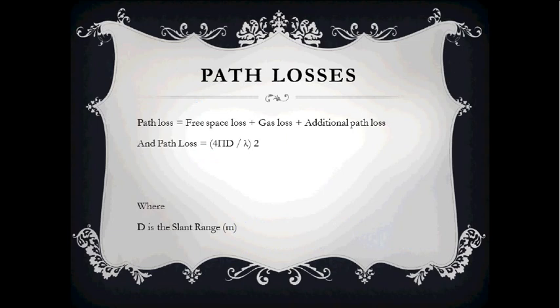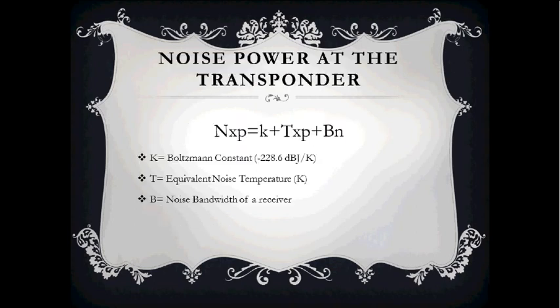Path loss is the sum of the free-space loss, gas loss, and additional path losses, also calculated by the formula (4πd/λ)², where d is the slant range. Noise power at the transponder depends upon the Boltzmann constant, the equivalent noise temperature, and the noise bandwidth of a receiver. By summing these three factors we can calculate the noise power at the transponder in dBs.